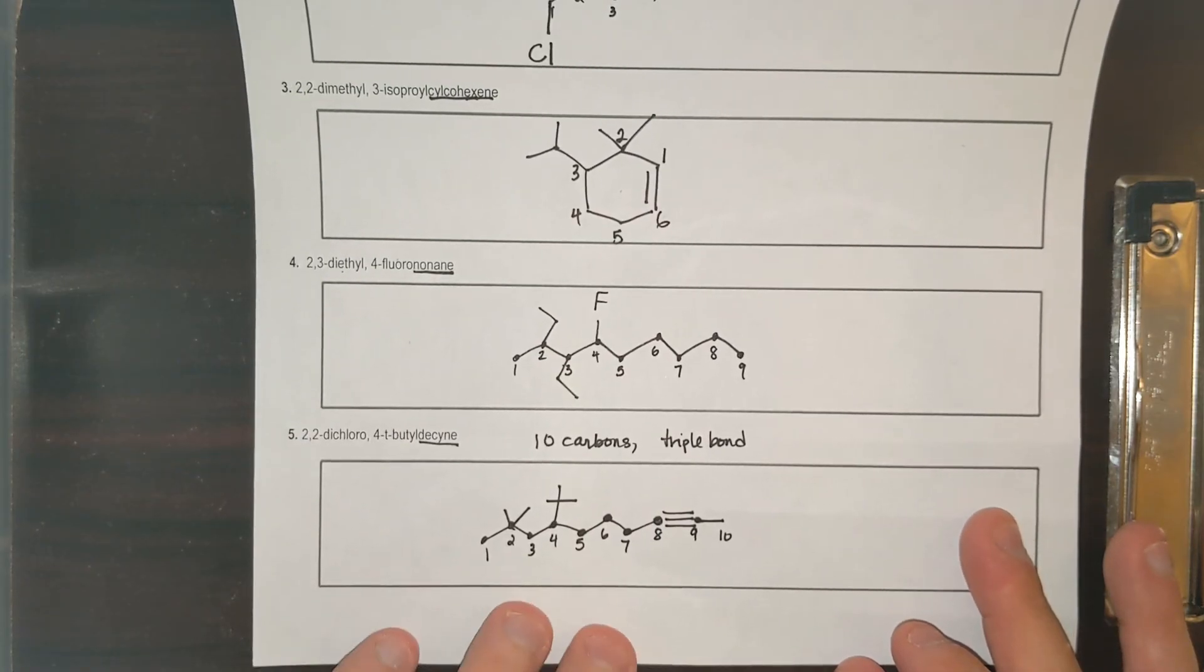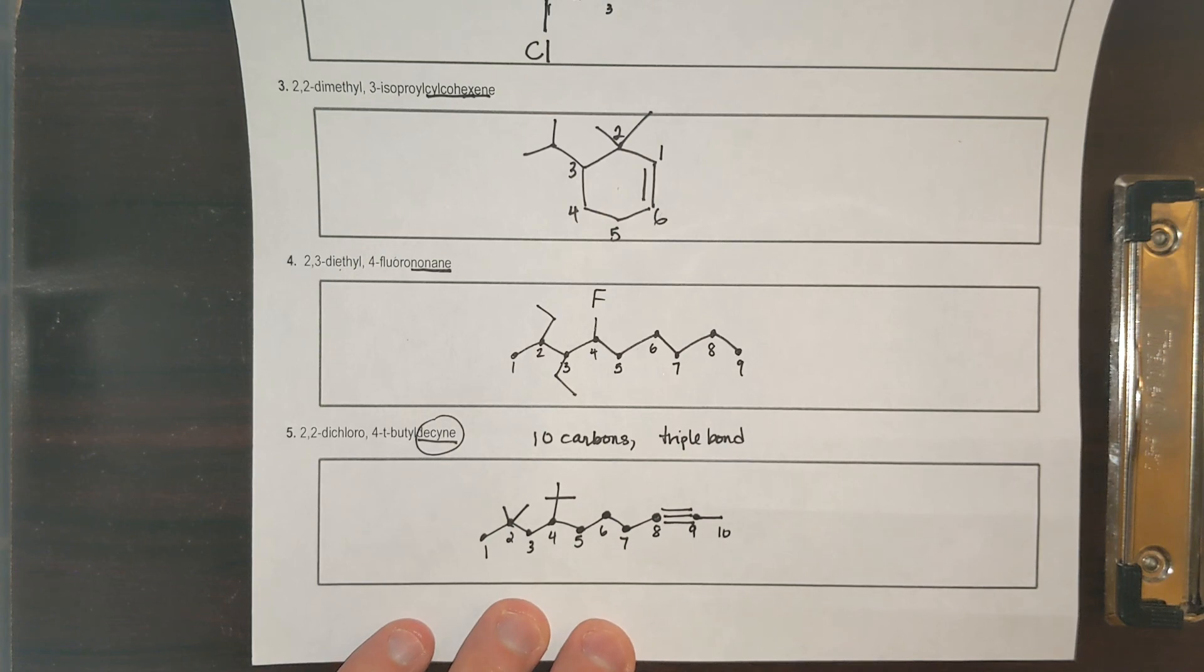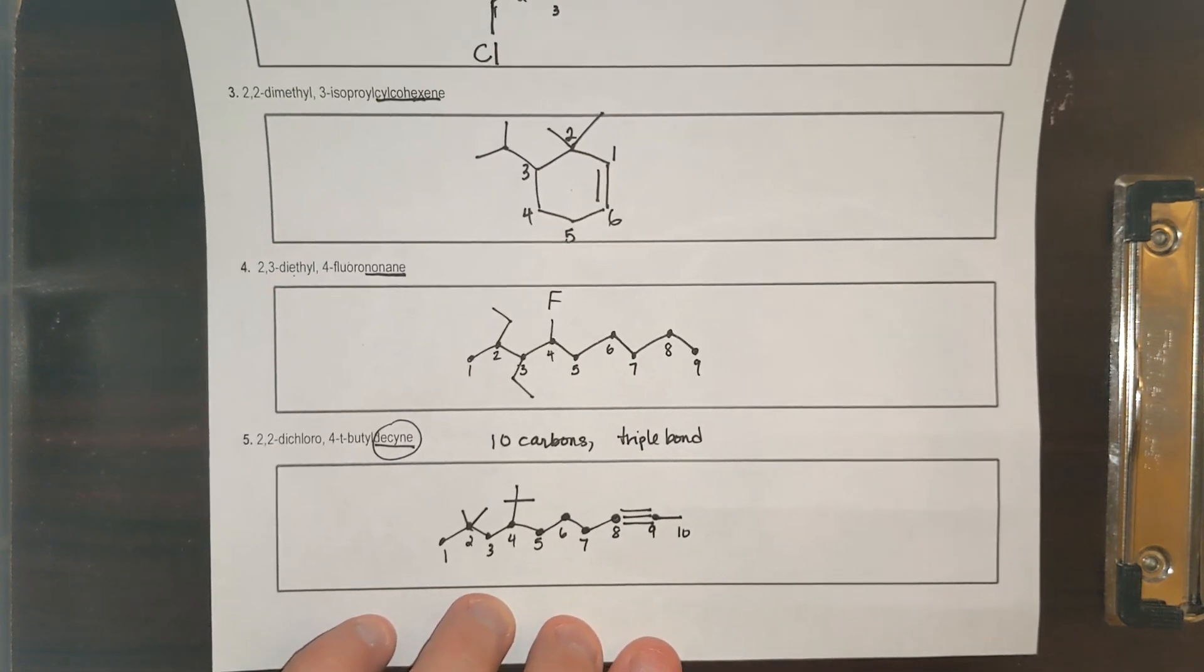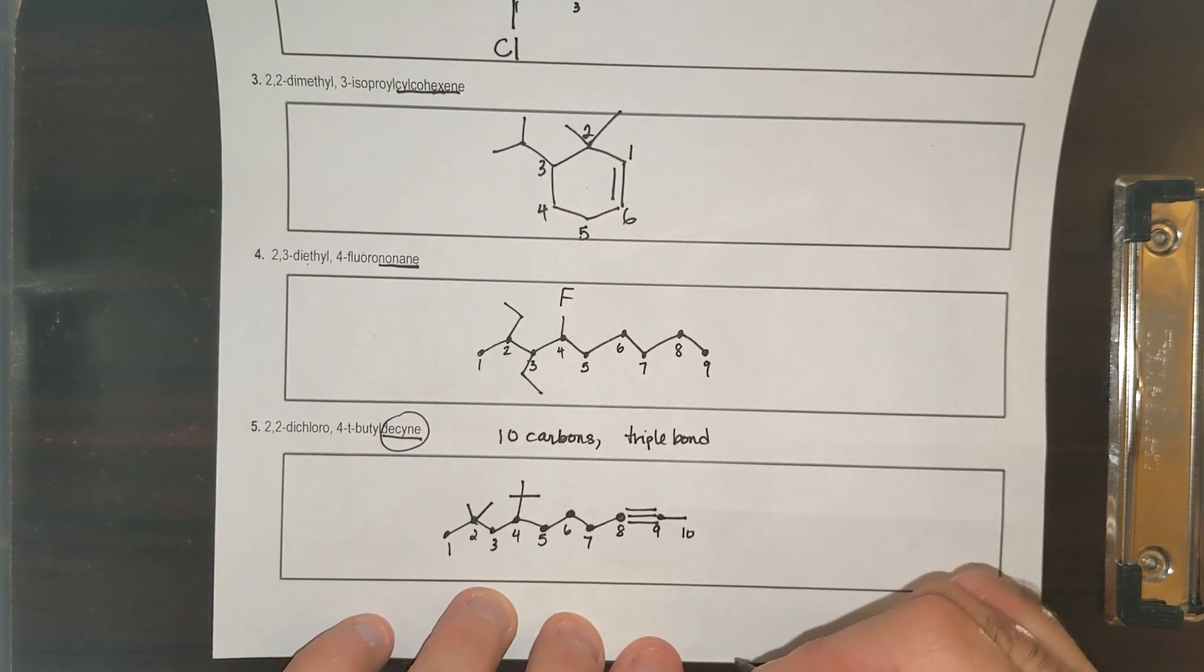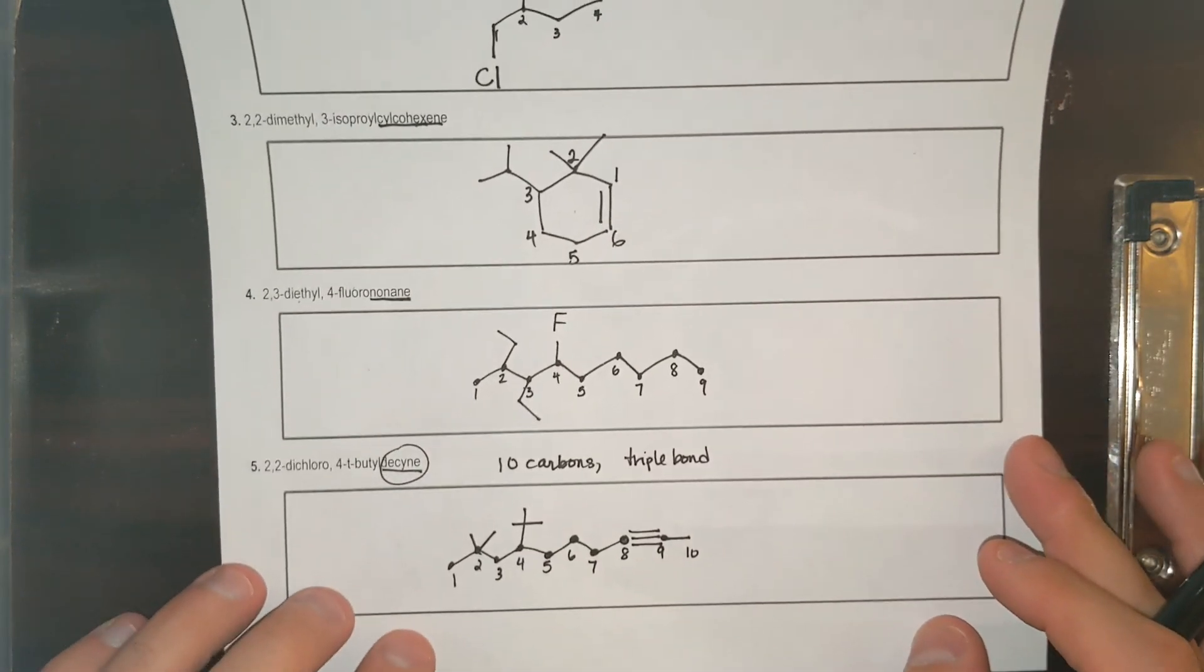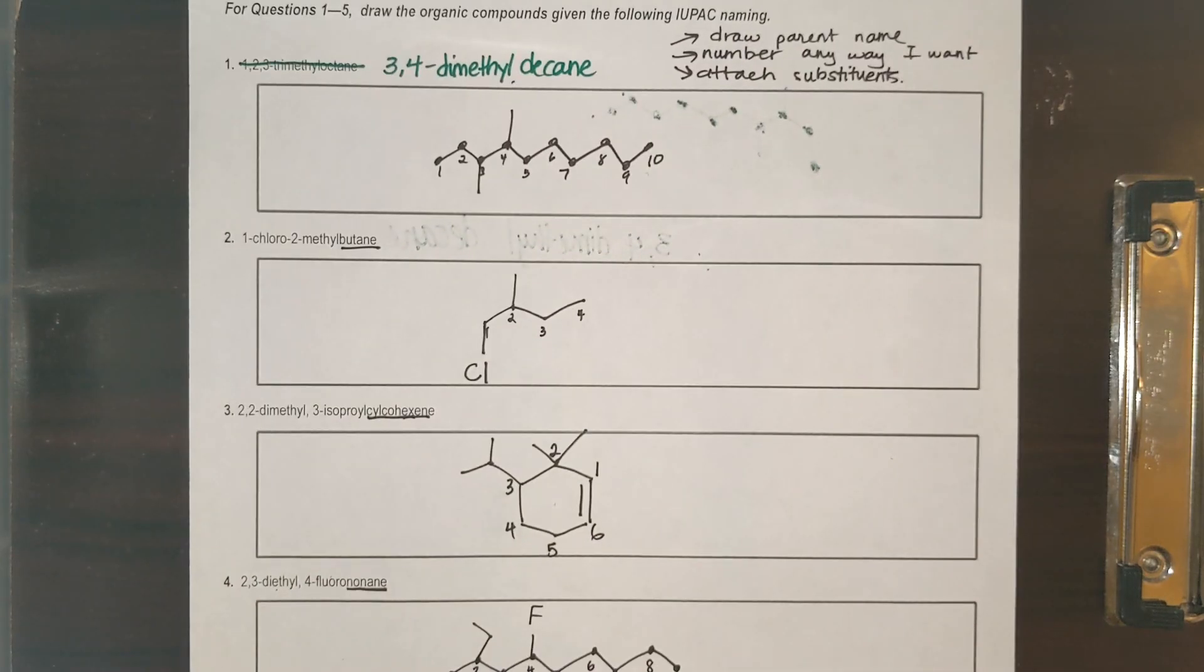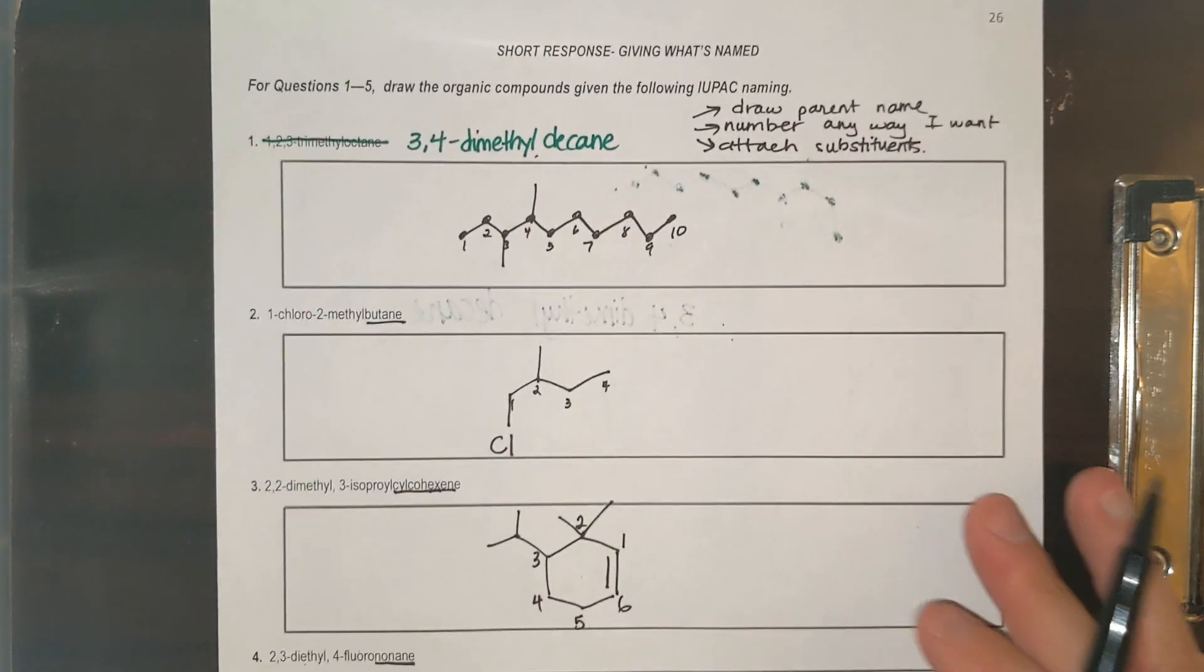Okay, later on you will see that the triple bond is going to have a number or it's going to take precedent. There's going to be an order of functional groups in the way we put them on our compounds, but not right now. So you could use this video to help you do the rest of or start doing the practice set where you are drawing the different compounds.